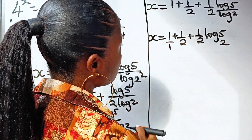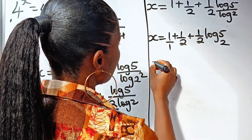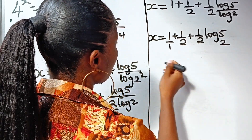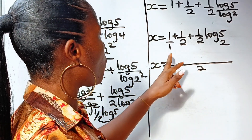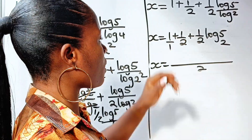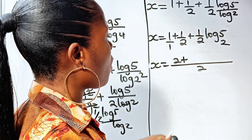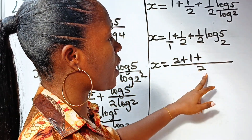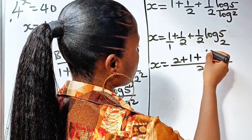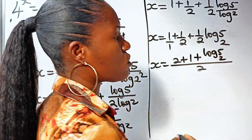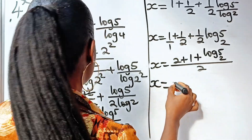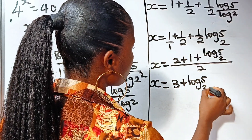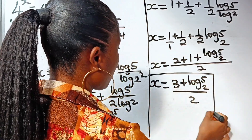Let's solve this. The LCM here is 2. So we have x is equal to: when 1 is multiplied over denominator 2 we get 2, plus 1, plus log 5 base 2, all over 2. So 2 plus 1 is 3, giving us x is equal to 3 plus log 5 base 2, divided by 2. This is the value of x.